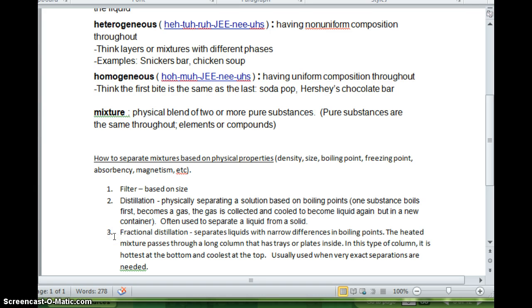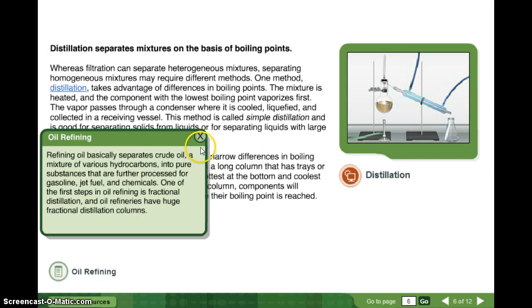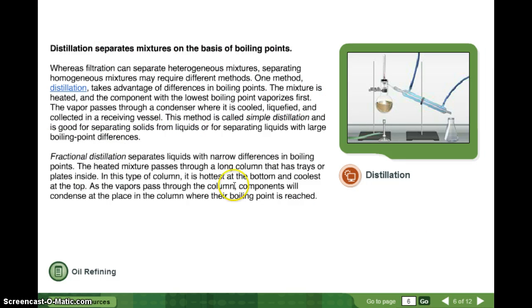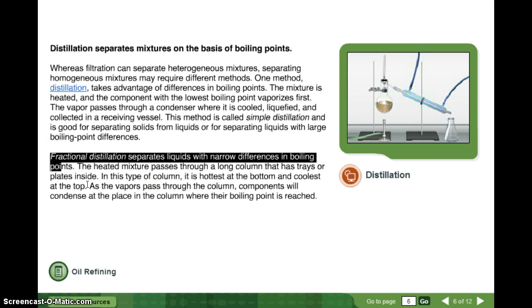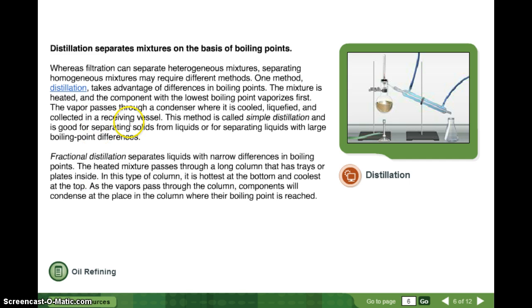So I added fractional distillation, separates liquids with narrow differences in boiling points. The heated mixture passes through a long column that has trays or plates inside. In this column, it is hottest at the bottom, coolest at the top. Usually used when very exact separations are needed. So if you're doing a multiple choice and you're like, oh, is it distillation or fractional distillation? If it's something very specific, it's usually almost always fractional distillation. If it's a solid and a liquid, we just call it distillation. Or if it's two liquids that have very different boiling points, then we can just do standard distillation.